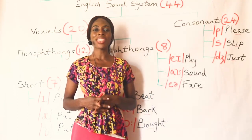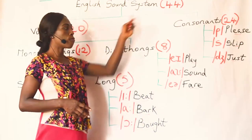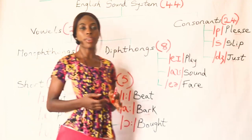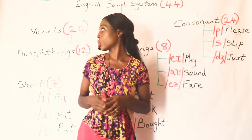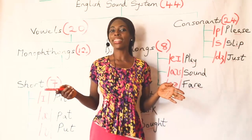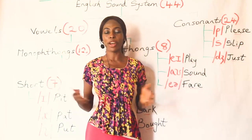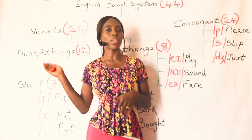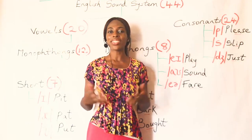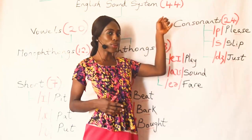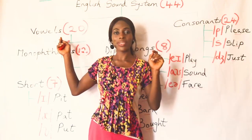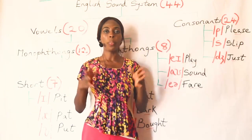Now the English sound system has 44 sounds, and these sounds are divided into vowels and consonants. Like the alphabet — we have 26 letters of the alphabet with 21 consonants and 5 vowels — in the English sound system we have 44 sounds: 20 vowels and 24 consonants.